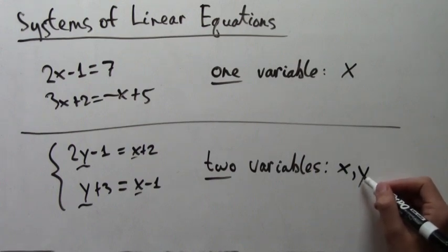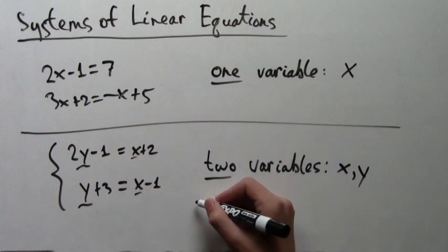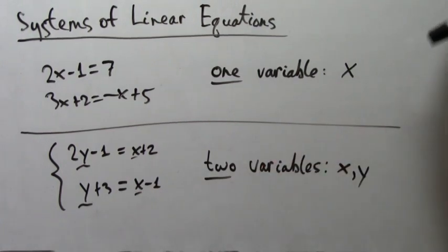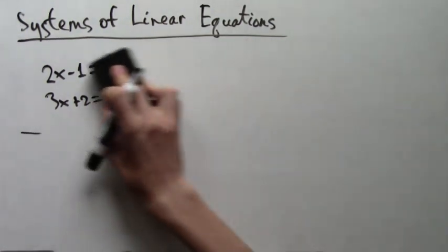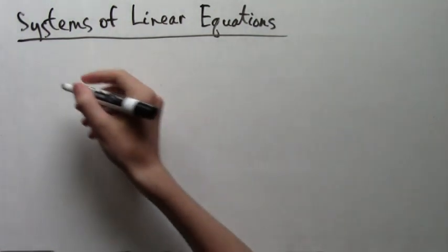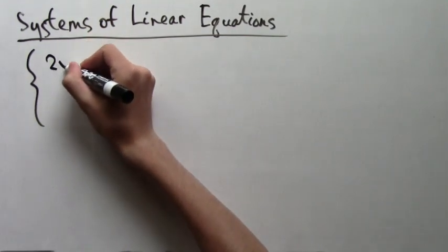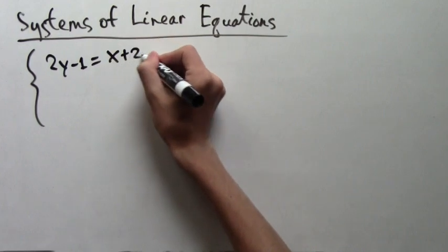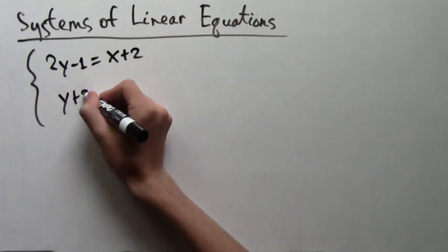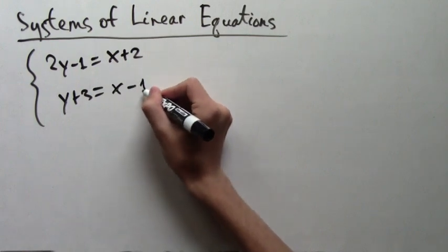So we're going to solve this example. Let's clean up and rewrite it more clearly on top of the board. 2y minus 1 equals x plus 2, and y plus 3 equals x minus 1.